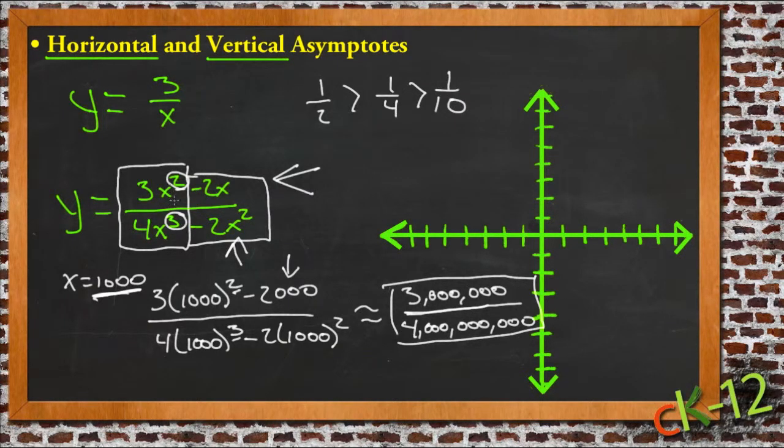It works the other way when the power on top is larger. When the power on top is larger, the function just keeps growing because we have a big number divided by a small number. And when the powers are the same, then those x values eventually don't matter at all because they just keep canceling each other out, and all that's left in that case is the coefficients of those largest x terms themselves. So if these two things were the same power, we'd end up with just 3 quarters.